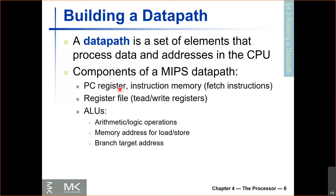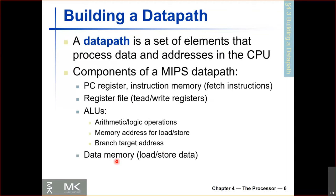So we need a PC register and instruction memory to fetch instructions, a register file to read and write registers, an ALU to do all kinds of operations, and finally a data memory — because when we load and store data, we load and store from memory. So these are the major components of our data path: the PC and instruction memory, the register file, the ALUs, and the data memory. With that said, let's start building a data path.